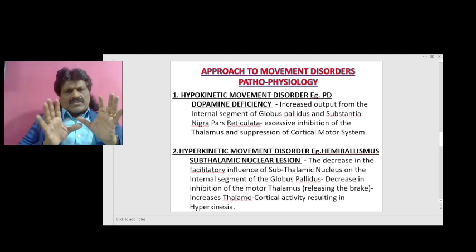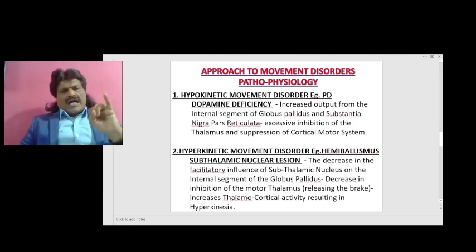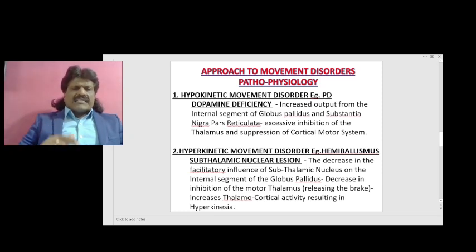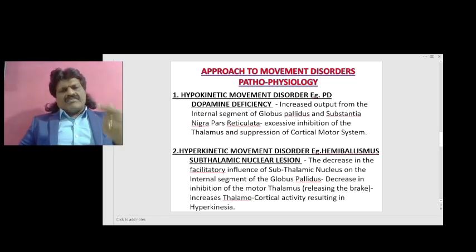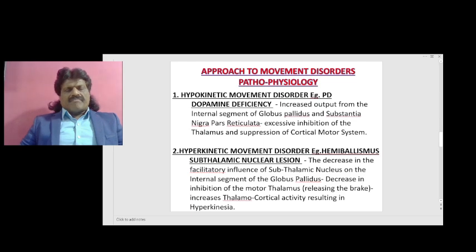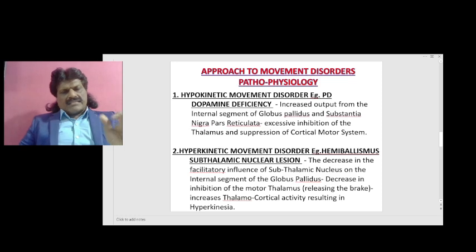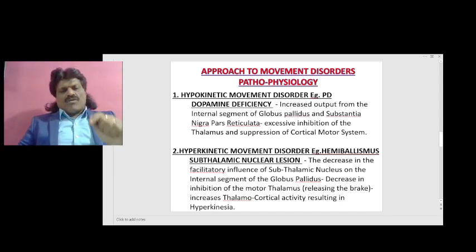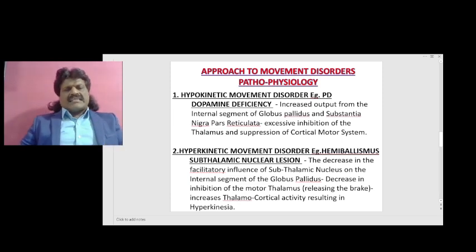In summary, the pathophysiology of a hypokinetic movement disorder — example Parkinson's disease — is due to dopamine deficiency. It is because of increased output from the internal segment of globus pallidus and substantia nigra pars reticulata, resulting in excessive inhibition of the thalamus and suppression of the cortical motor system. For hyperkinetic movement disorder — example hemibalismus — the lesion is the subthalamic nucleus; there is a decrease in the facilitatory influence of the subthalamic nucleus on the internal segment of the globus pallidus, causing a decrease in inhibition of the motor thalamus, releasing the brake, increasing thalamocortical activity, resulting in hyperkinesia.